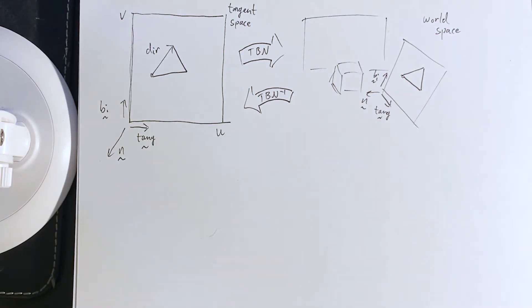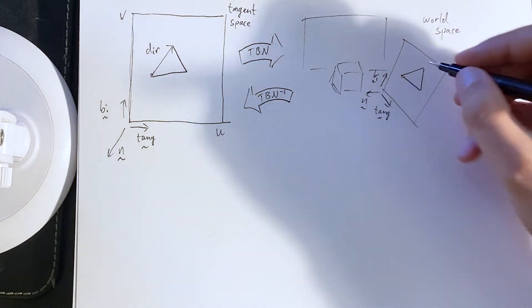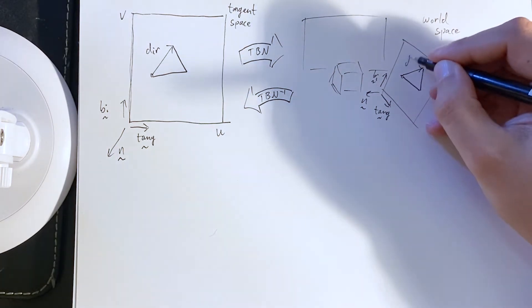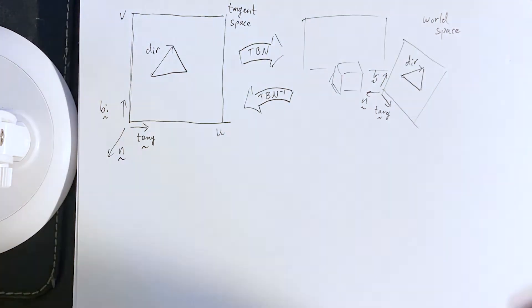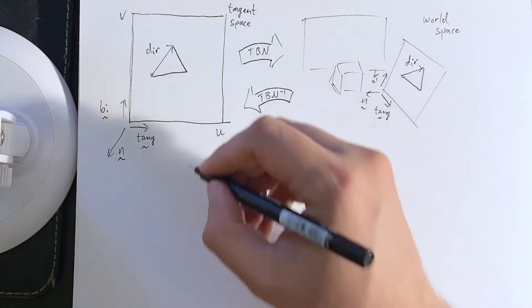So, by subtracting, we can get a direction vector inside our model. And that maps to this direction vector here. And we can say, okay, how does that direction vector map?